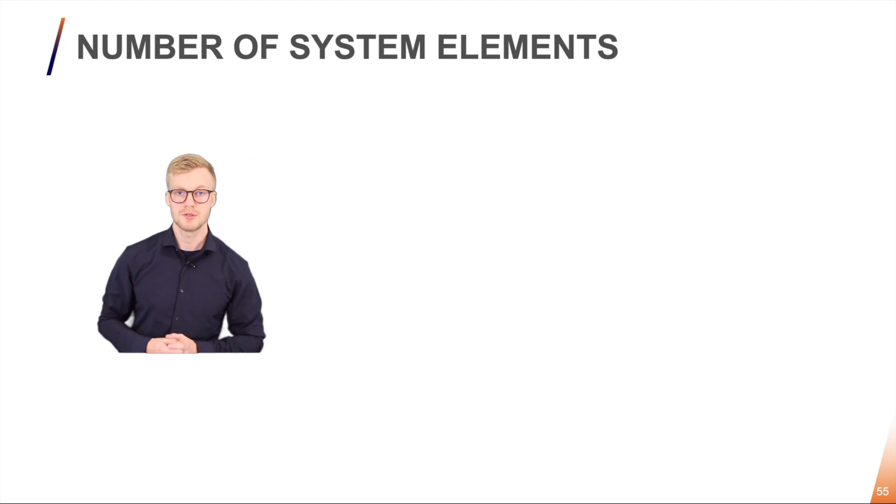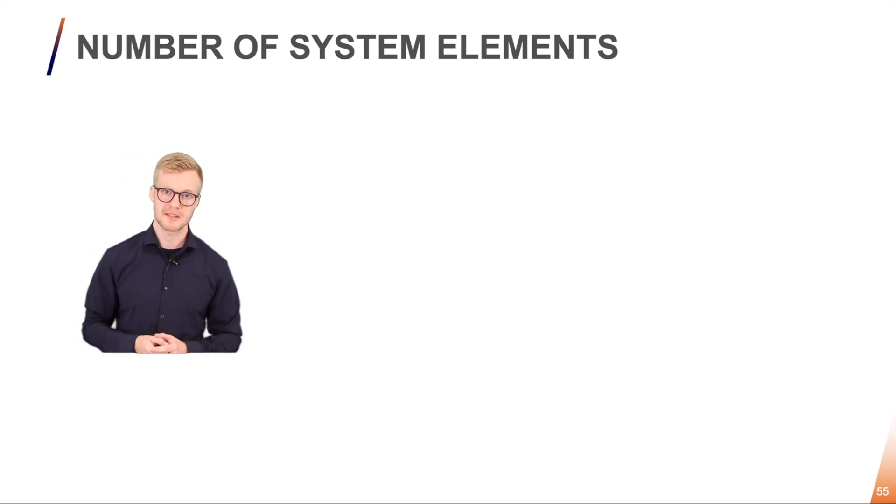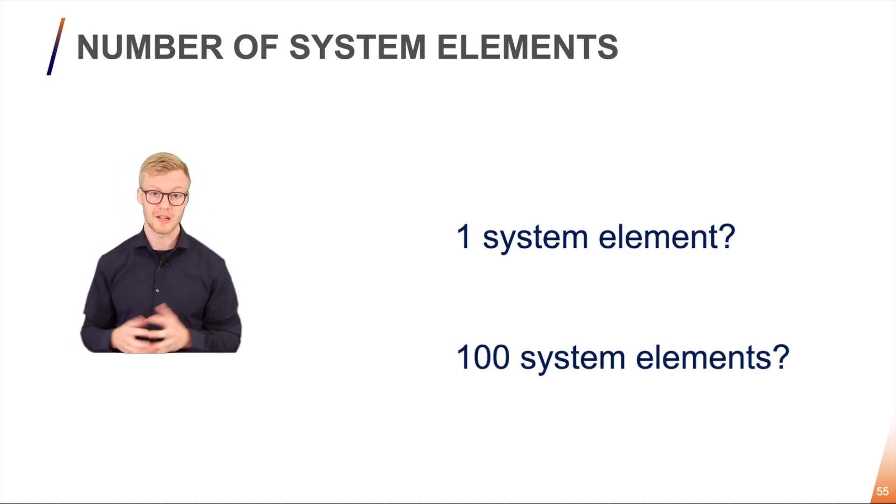The next thing we are going to discuss is the number of system elements that we normally find within a system. Do we normally find one system element within a system or do we normally find 100 system elements within a system?